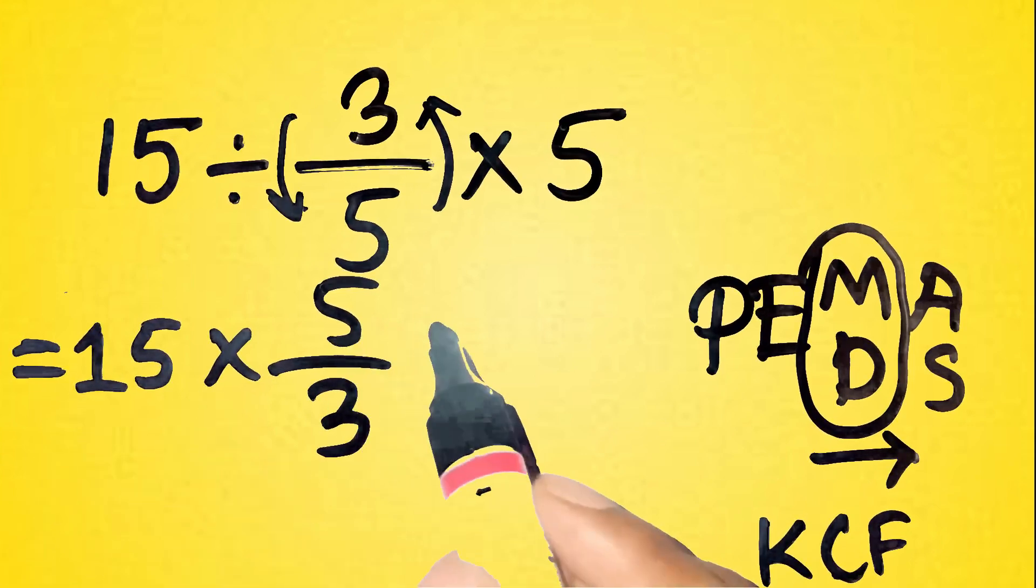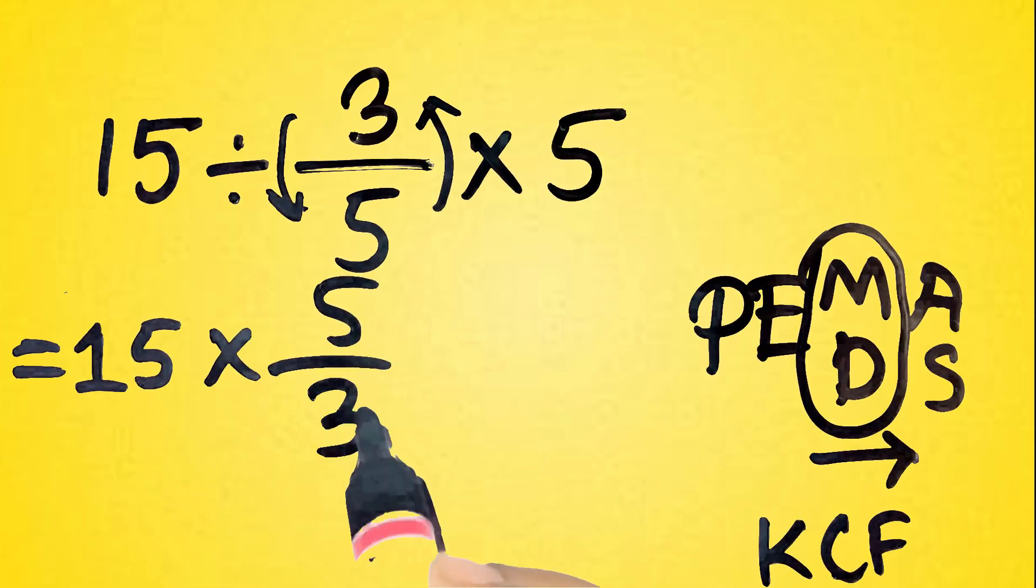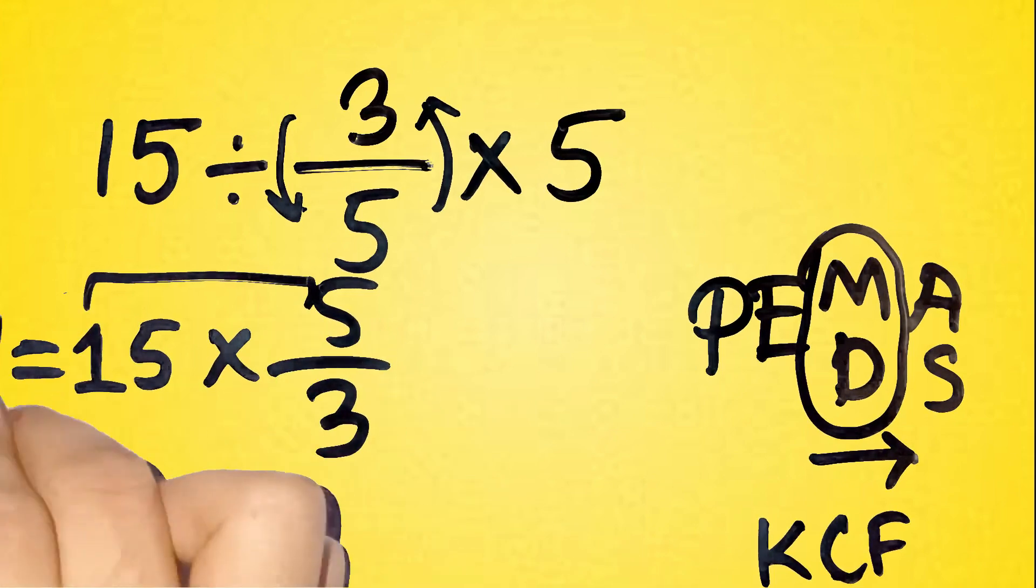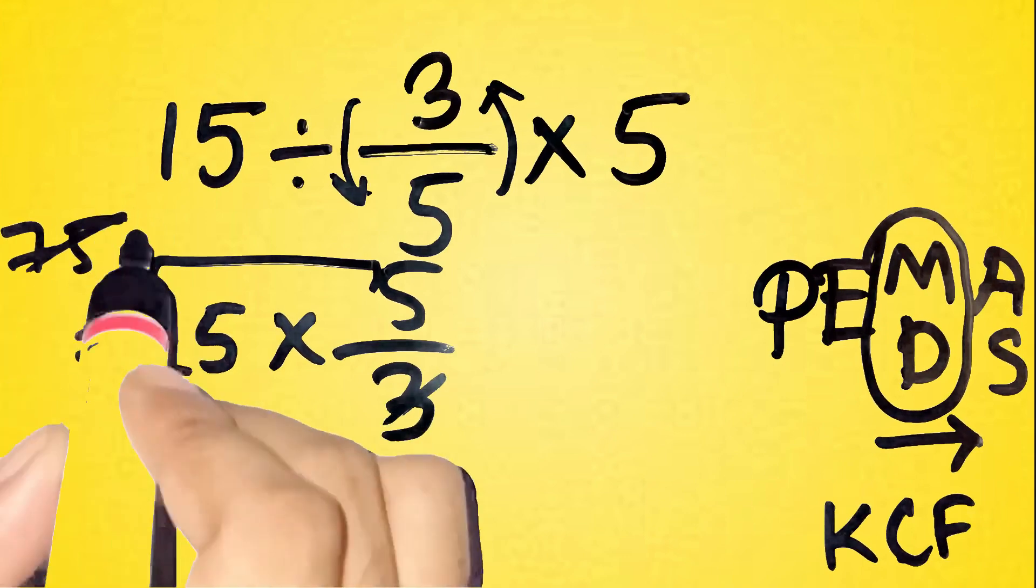Let's do it carefully. Step 1, 15 times 5 over 3. Multiply 15 times 5 equals 75, and then divide by 3 gives 25.